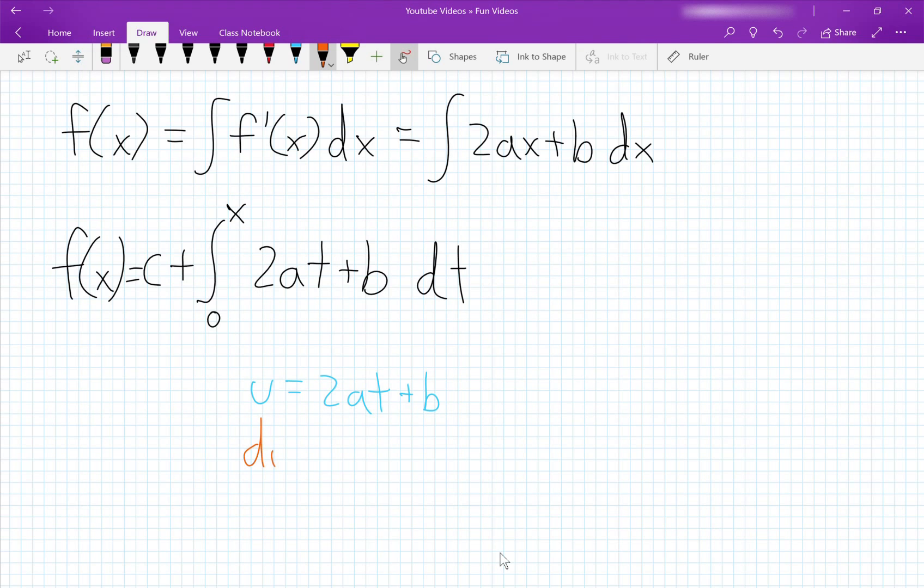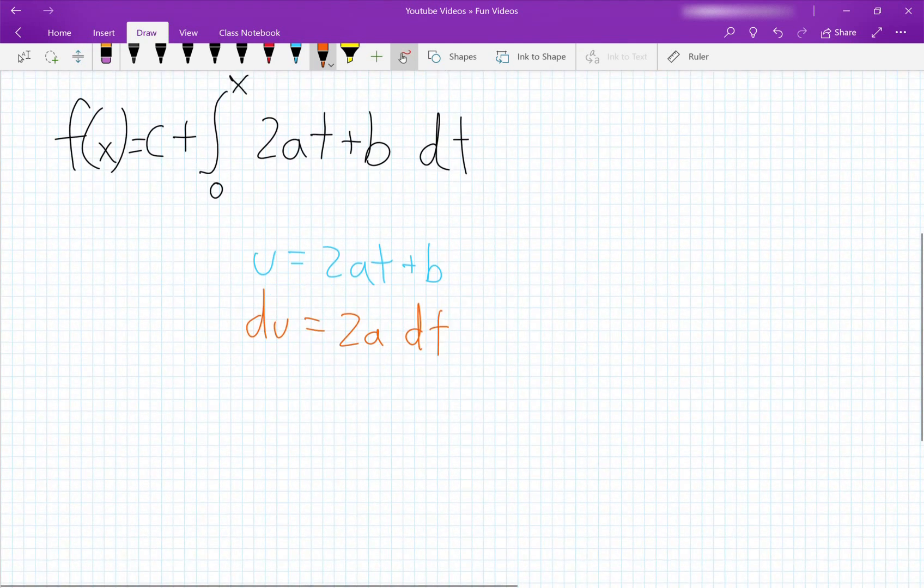We set u to 2at plus b. Then our du, the derivative, would be 2a dt. So remember, 2a is a constant. So we have to find a way to stick 2a somewhere into this definite integral.